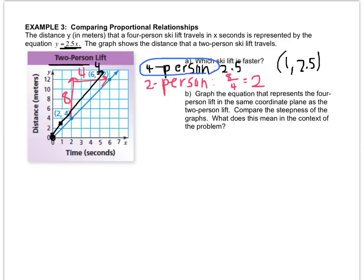Compare the steepness. I guess I should write the equation. Y equals two point five x. Compare the steepness of the graphs. What does this mean in the context of the problem?